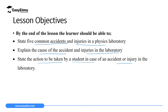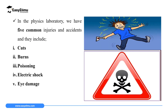For every accident or injury, I want you to be keen on what can cause that injury or accident, and after knowing the causes, be able to identify the action that must be taken. In a physics laboratory we have five common injuries and accidents: number one, cuts; number two, burns; number three, poisoning; number four, electric shock; and number five, eye damage.